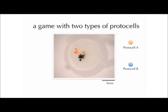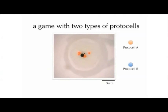Protocell B's — the blue ones — all come together and fuse to form one big blob. The other protocell just dances around. This just happens until all of the energy in the system is basically used up, and then game over.